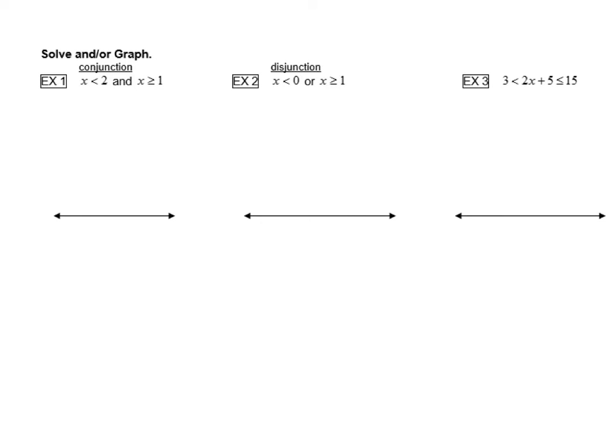So let's take a look at just a couple examples of these compound or combined inequalities. So this first one, it says x is less than 2 and, so that's what makes it the conjunction, x is greater than or equal to 1. So what you want to notice is this is solved for x and this is solved for x. So that means that we're ready to graph it.